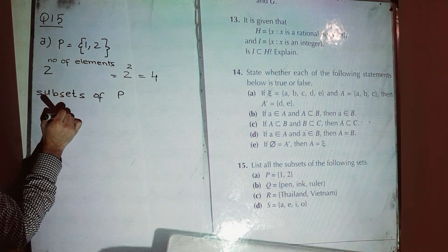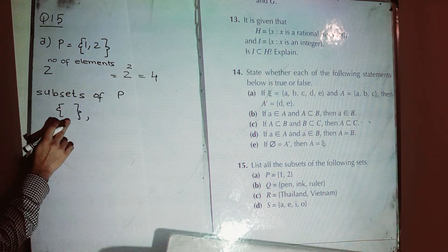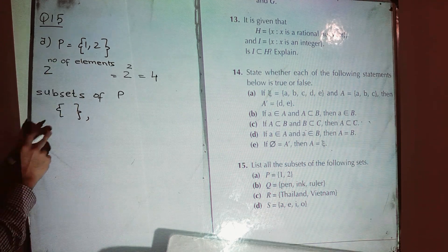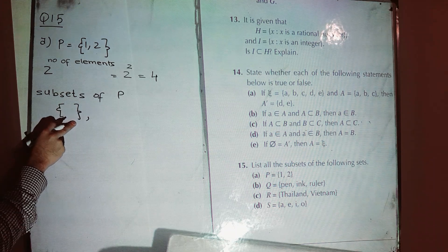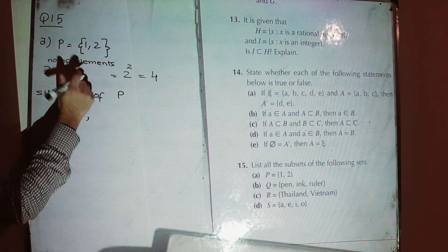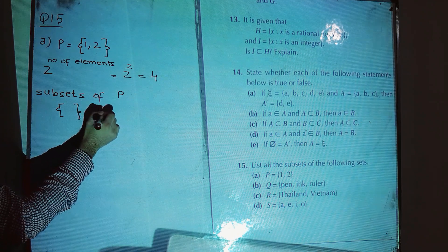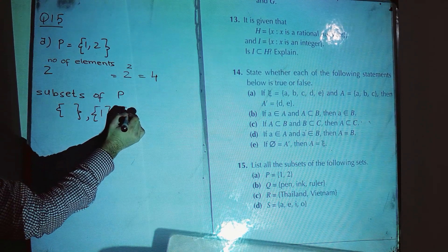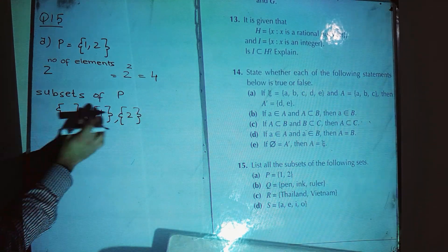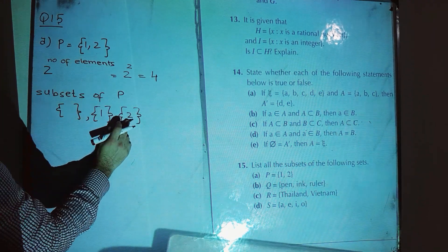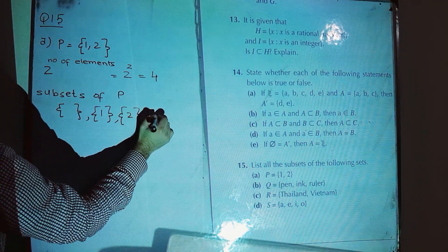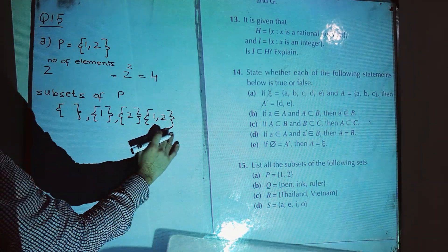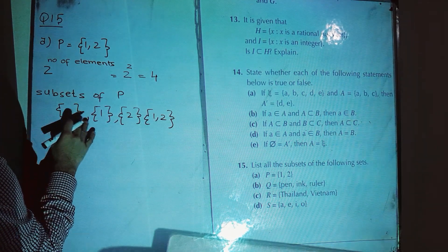An empty set is a subset of all sets — whatever the set is, the empty set will be a subset of every set. Then we have the subset containing element {1}, then {2}, and then both {1, 2}. In total we have four subsets, starting with the empty set, then subsets with one element, then with two elements.